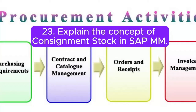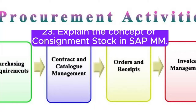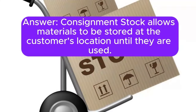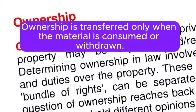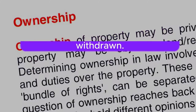Question 23: Explain the concept of consignment stock in SAP MM. Answer: Consignment stock allows materials to be stored at the customer's location until they are used. Ownership is transferred only when the material is consumed or withdrawn.